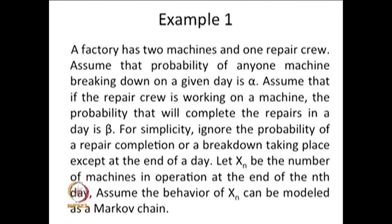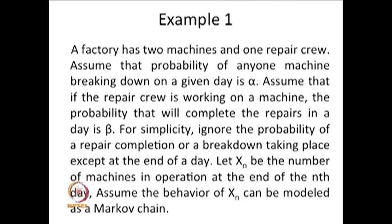The possible values of Xn — since we have two machines — will be 0, 1, or 2. This forms the state space S = {0, 1, 2}. Xn over n forms a discrete time Markov chain because it is a discrete time, discrete state stochastic process.